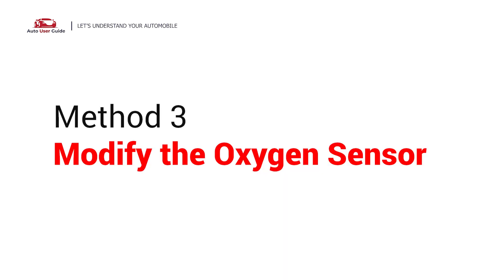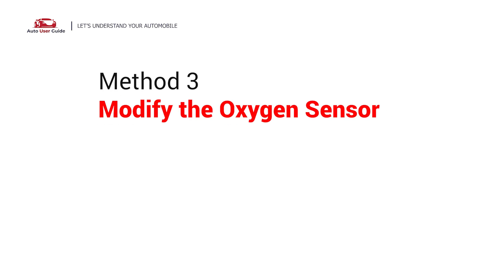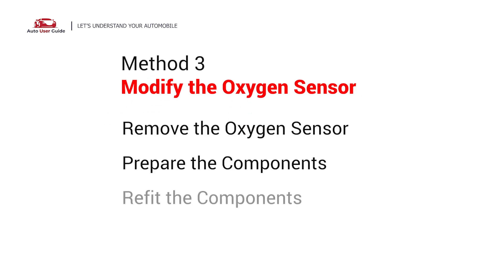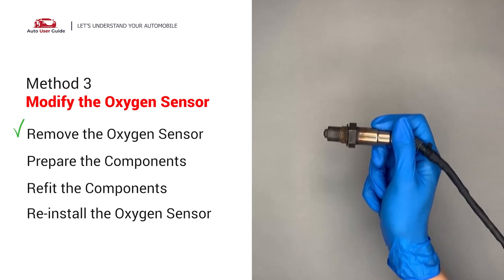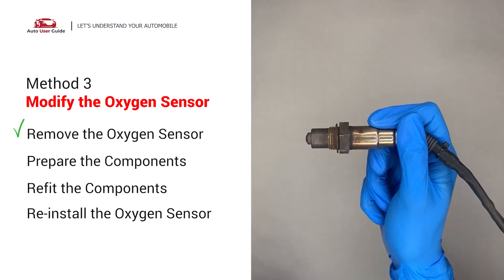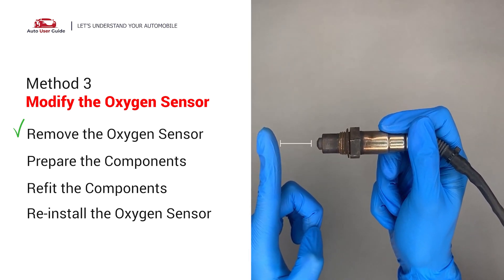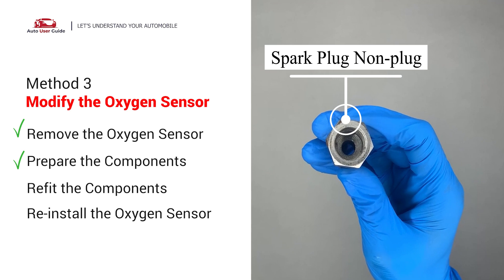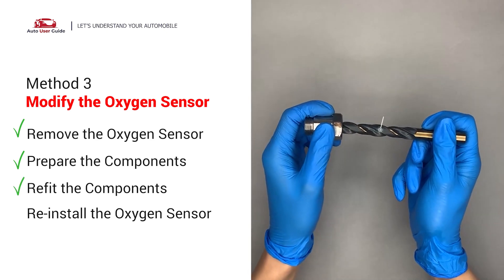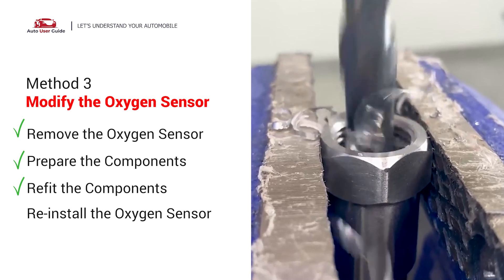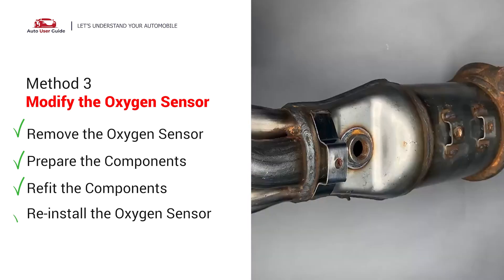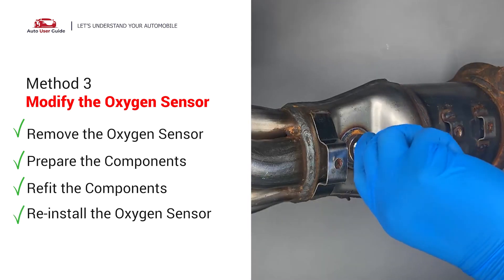Method 3: Modify the oxygen sensor. You can remove the oxygen sensor from the converter by creating extra space between the sensor and the converter. Then fit the non-fouler spacer plug into the oxygen sensor and use a half-inch drill to refit it. Put them together and reinstall the catalytic converter.